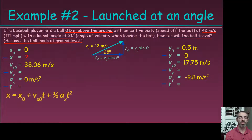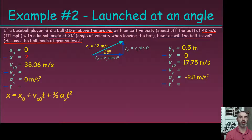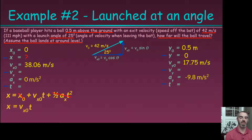We're looking for final x, so we use the horizontal kinematic equation. This is the only useful equation in the horizontal direction because, with zero acceleration, initial and final velocities are equal — the vx squared equations just confirm that. Canceling the zero terms, we get x equals vx0 times t.